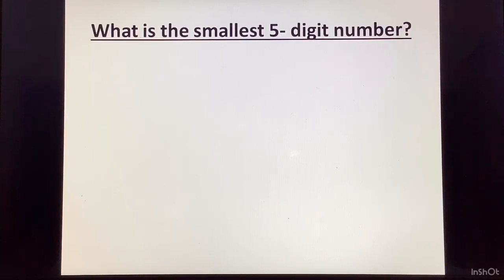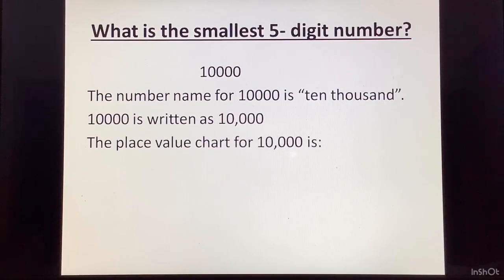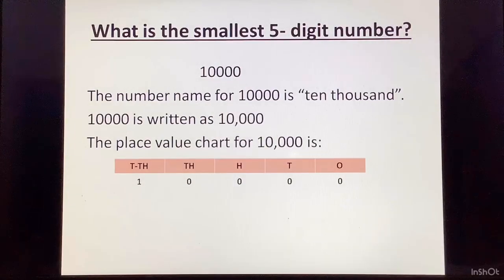What is the smallest five digit number? We have just come across this. It is 1 followed by four zeros. The number name for this is 10,000. And it is written as 10,000. The place value chart for this is ones, tens, hundreds, thousands and ten thousands. Under the ten thousand column, we will have 1 and rest of the places will be occupied by 0.